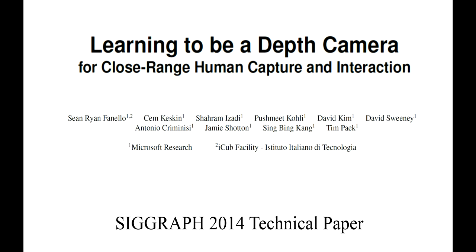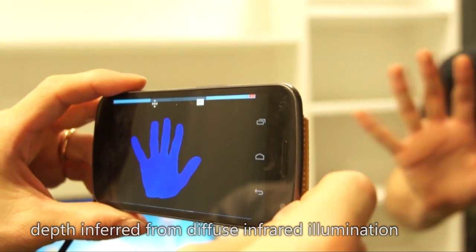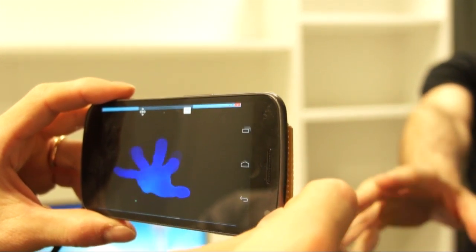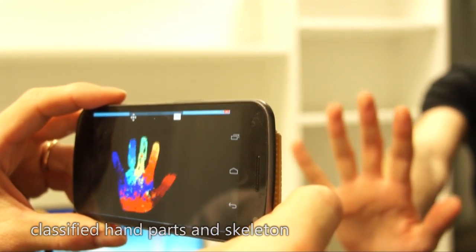We present a machine learning technique for turning any camera into a depth camera for interactive scenarios. In this example we demonstrate our depth sensing technique on a modified mobile phone camera allowing for 3D skeletal tracking of the hand.